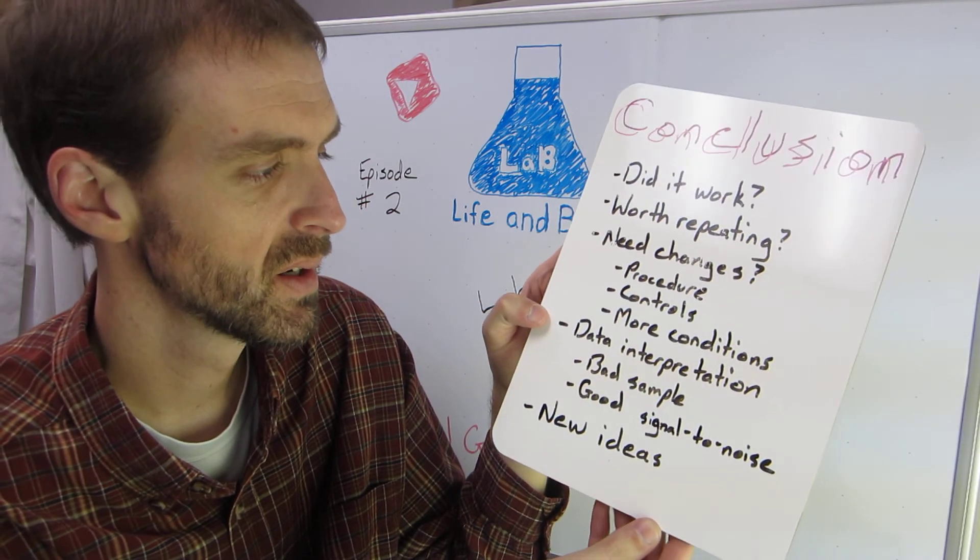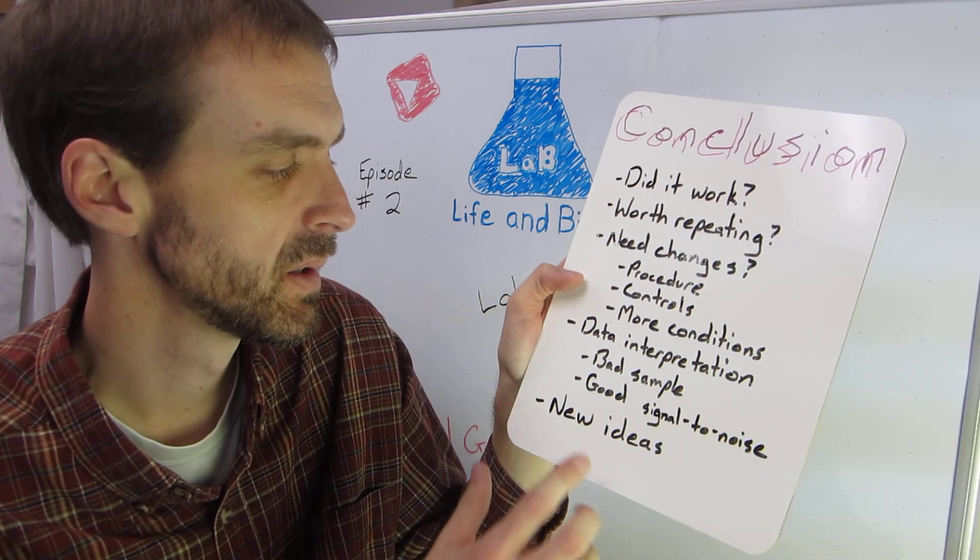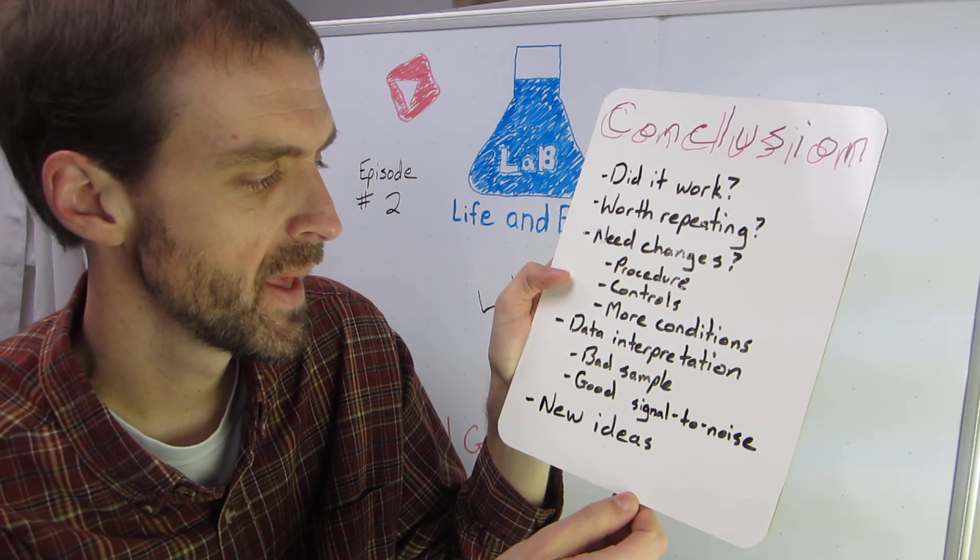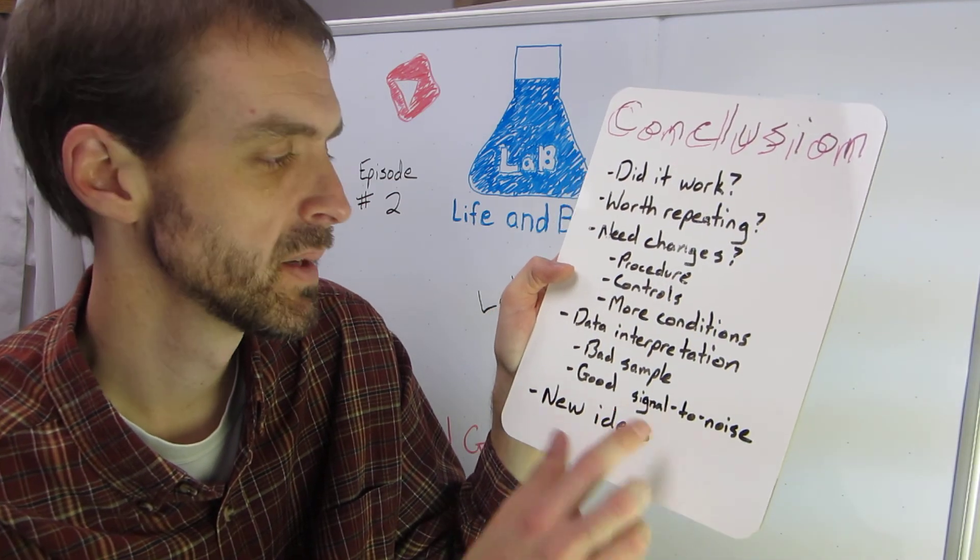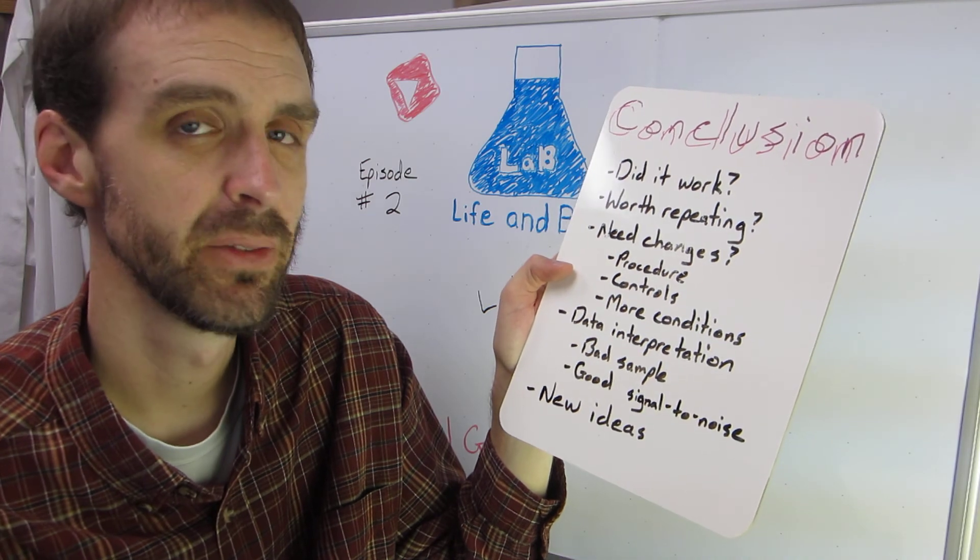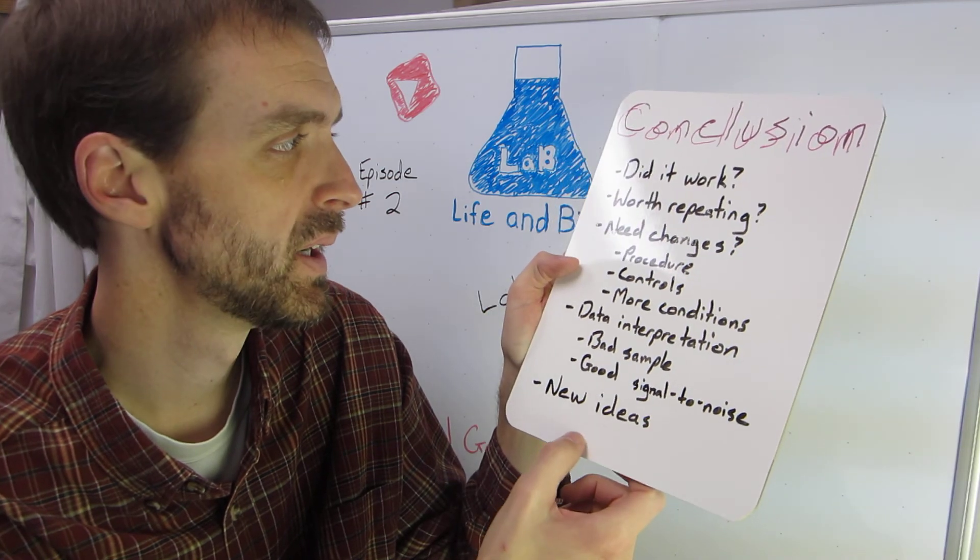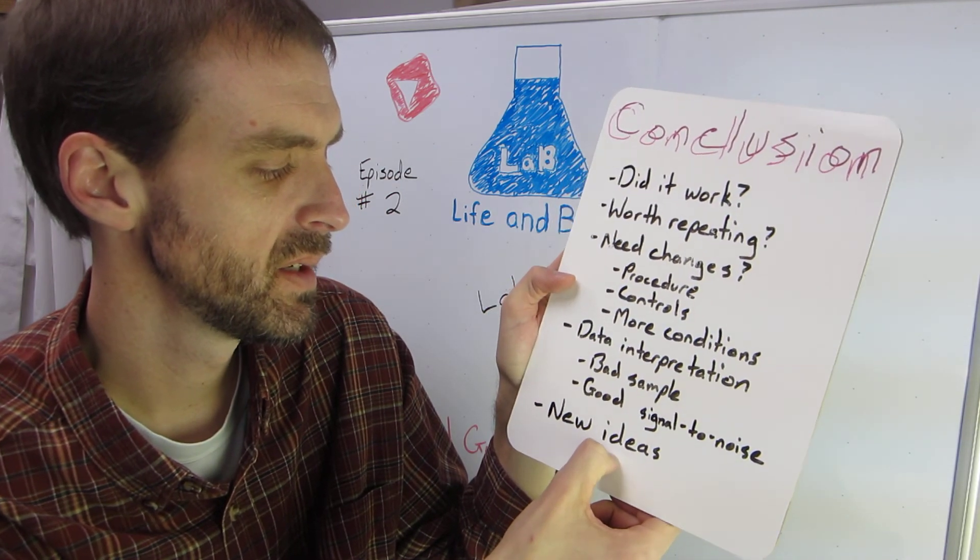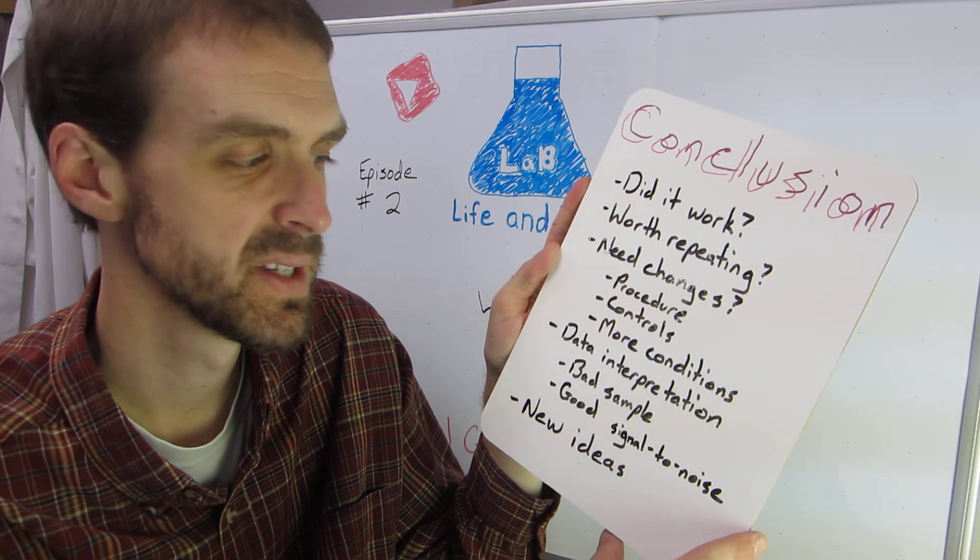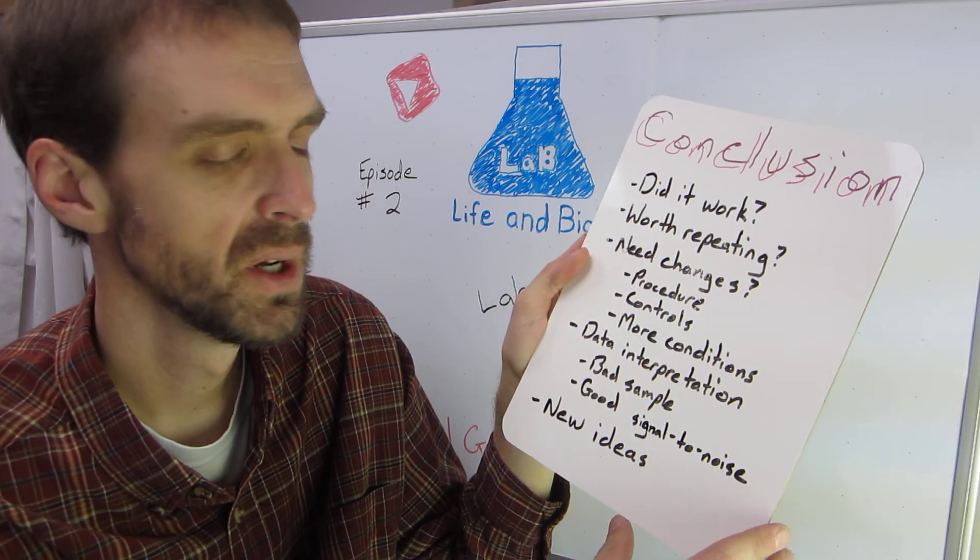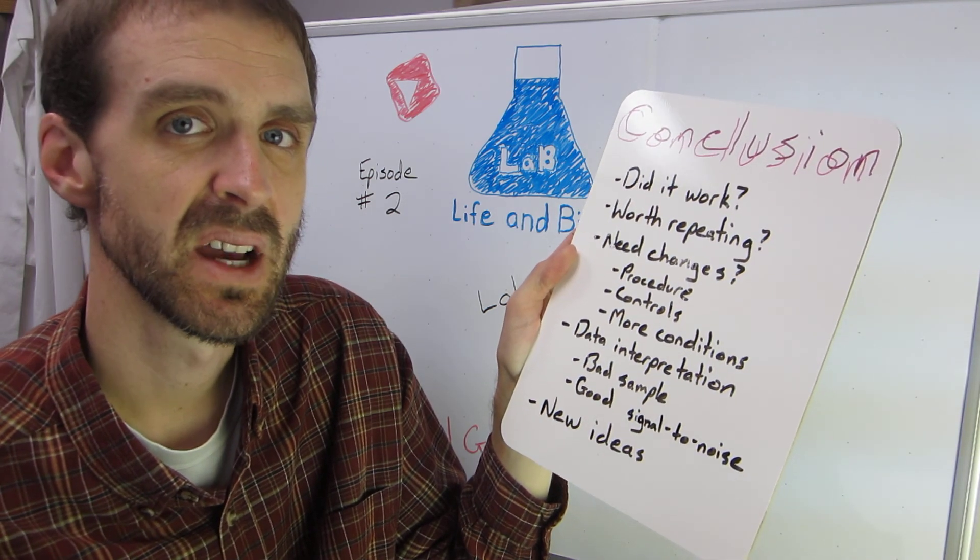And then, of course, your conclusion should have data interpretation. You need to know whether there are bad samples in your experiment and explain why you think that there are bad samples. You want to know whether when you're doing the readings, was there a good signal-to-noise ratio? Is this believable data? And then you should write new ideas. Are there new experiments you thought of? While you were doing the experiment, did you have a thought go through your mind that you want to remember to set up another experiment? So be sure to, I really think conclusions should be bullet points and it should be a very long section of your lab book.